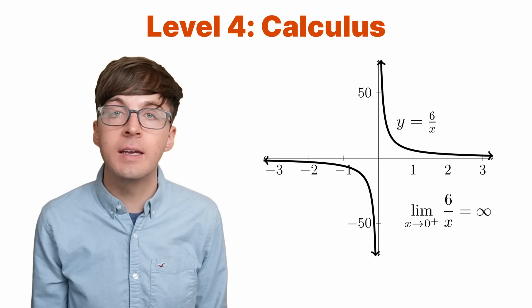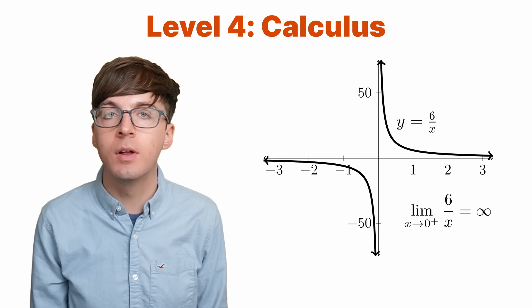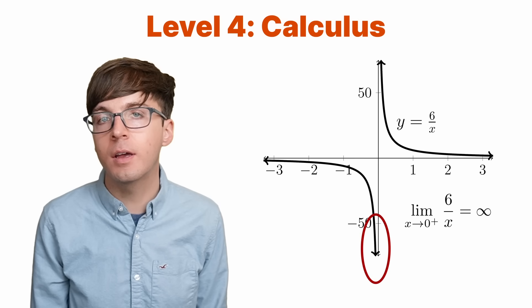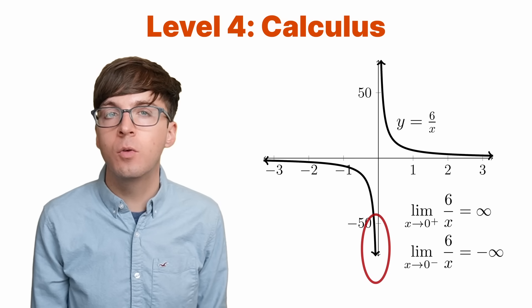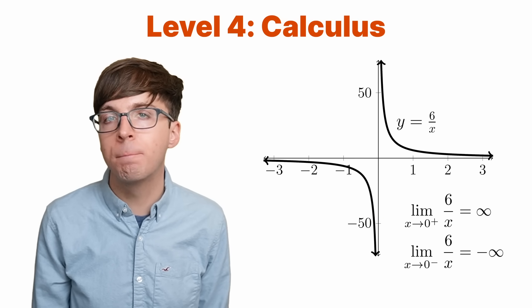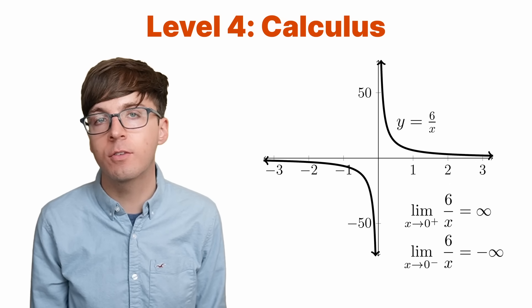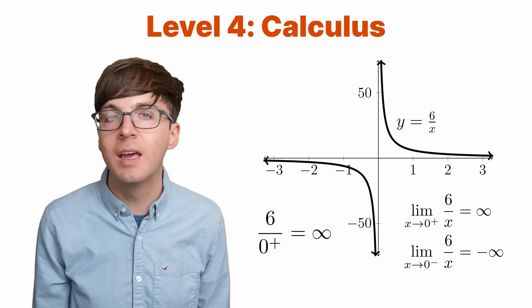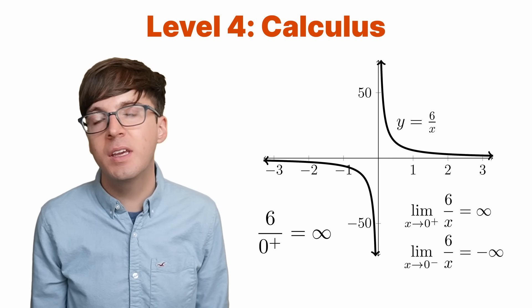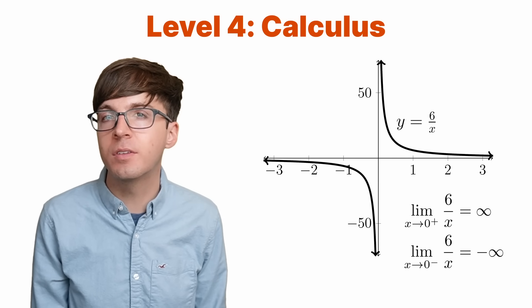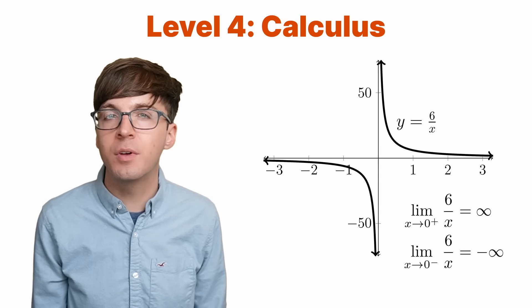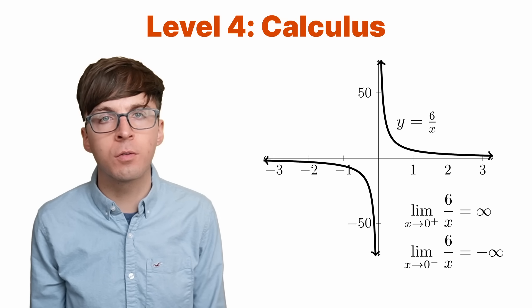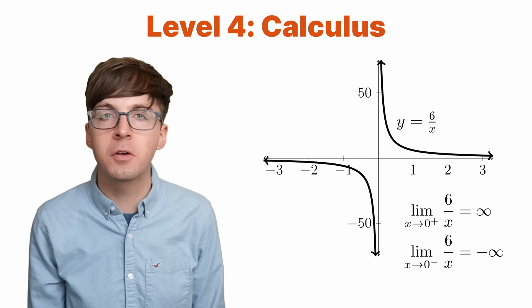So what happens when we divide by a negative number that's very close to zero? On this side, the limit of six over x as x approaches zero from the negative side is equal to negative infinity. So we still can't divide by zero, but this gives us a solution to a similar question. A positive number divided by an infinitesimal positive number is infinity. But keep in mind, this answer of infinity does not help us in all contexts. For example, it still doesn't really make sense to say that you could split up six cookies among zero friends by giving each friend infinitely many cookies.